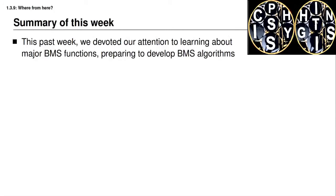This past week we devoted our attention to learning about major battery management system functions as part of the preparation to learn how to design battery management system algorithms. We looked at an overview of what a battery management system is required to do, and we looked at five basic categories of what a battery management system must do, including sensing and high voltage control and performance management and communications and so forth.